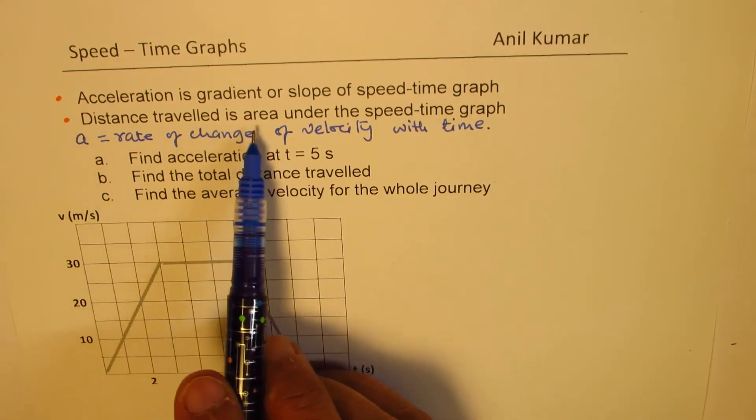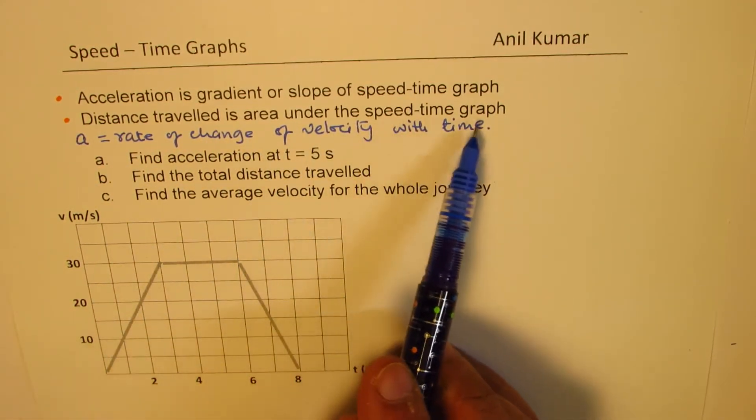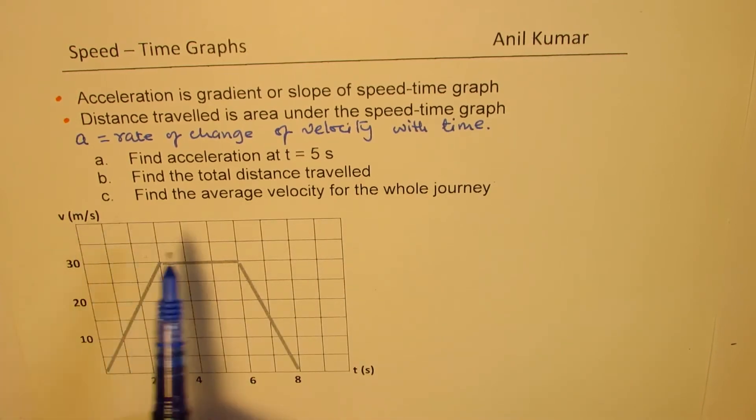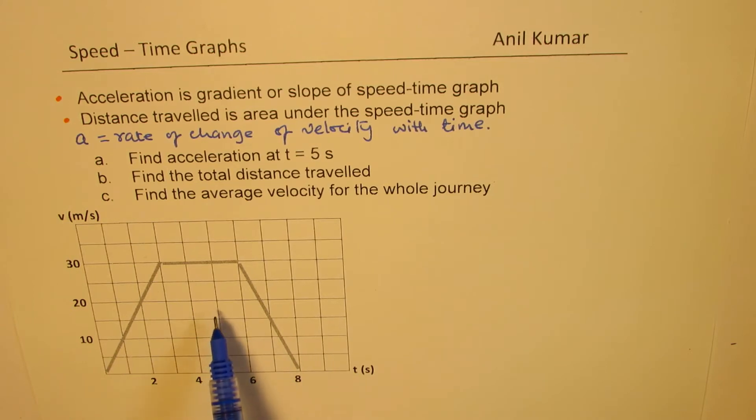Now, distance traveled is area under the speed and time graph. So if you are given speed and time or velocity and time graph, you can always find distance traveled by calculating the area. Now, to calculate the area, you can add area of triangles with rectangle, or you could find area of a trapezoid. So in this case, either of these formulas can be used.